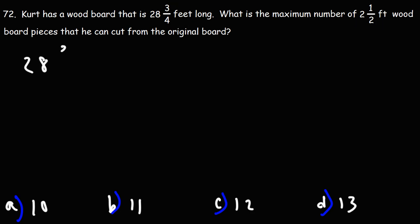So if we take the mixed number 28 and 3/4ths and divide it by another mixed number, 2 and 1 half, what will we get? In order to divide these two mixed numbers, we need to convert both of them into improper fractions first.